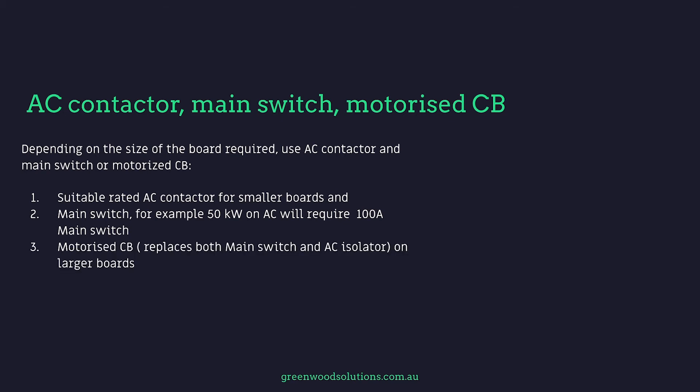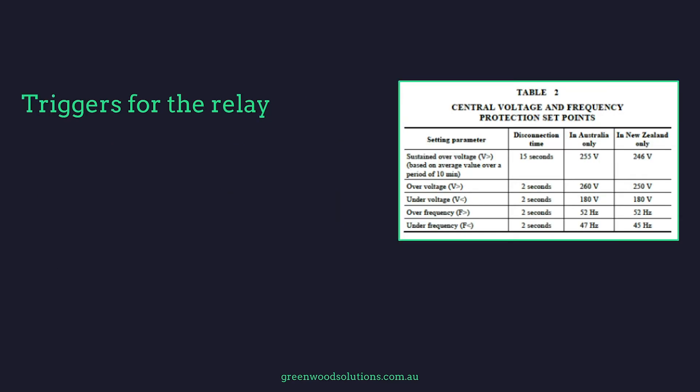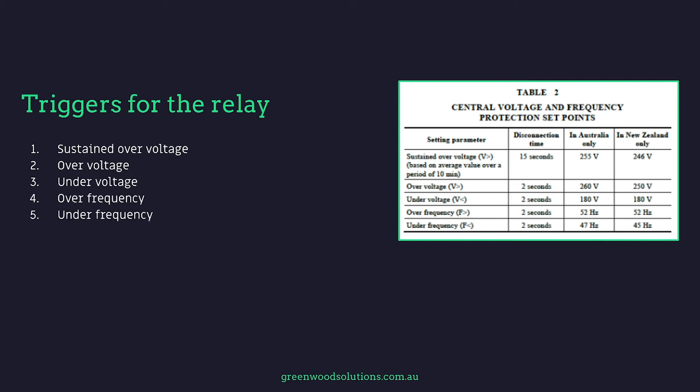A motorized circuit breaker replaces both the main switch and AC isolator on larger boards. The triggers for the relay include: sustained over voltage, over voltage, under voltage, over frequency, under frequency, and other triggers.